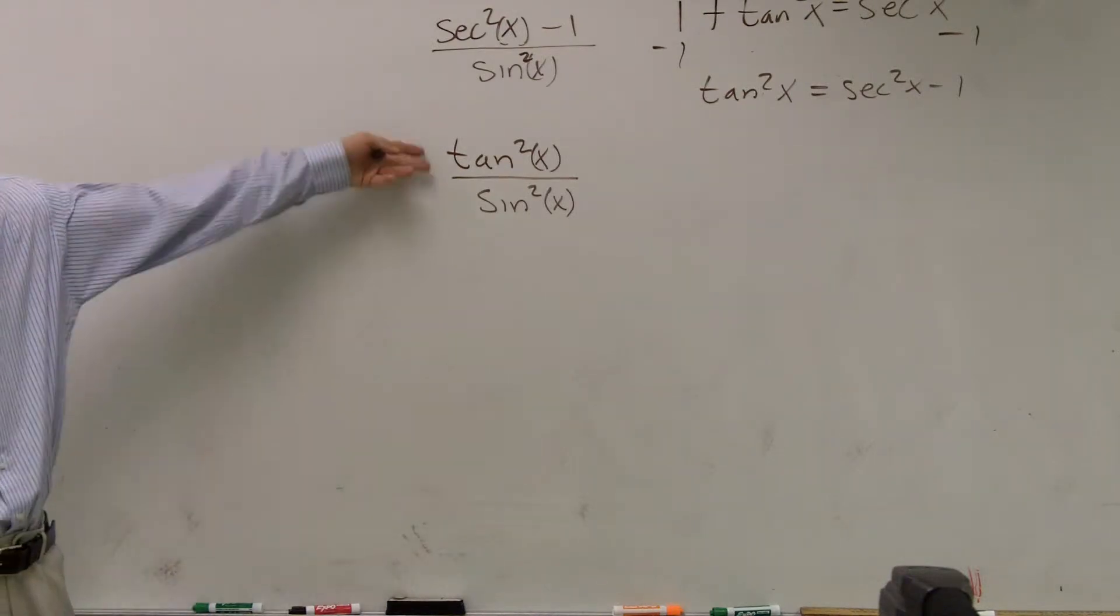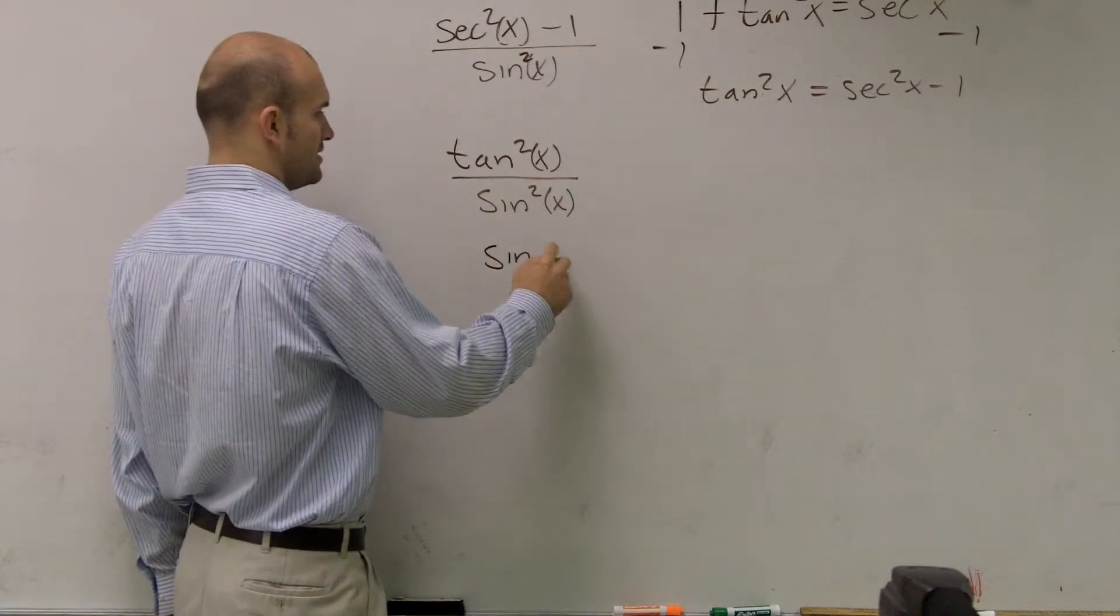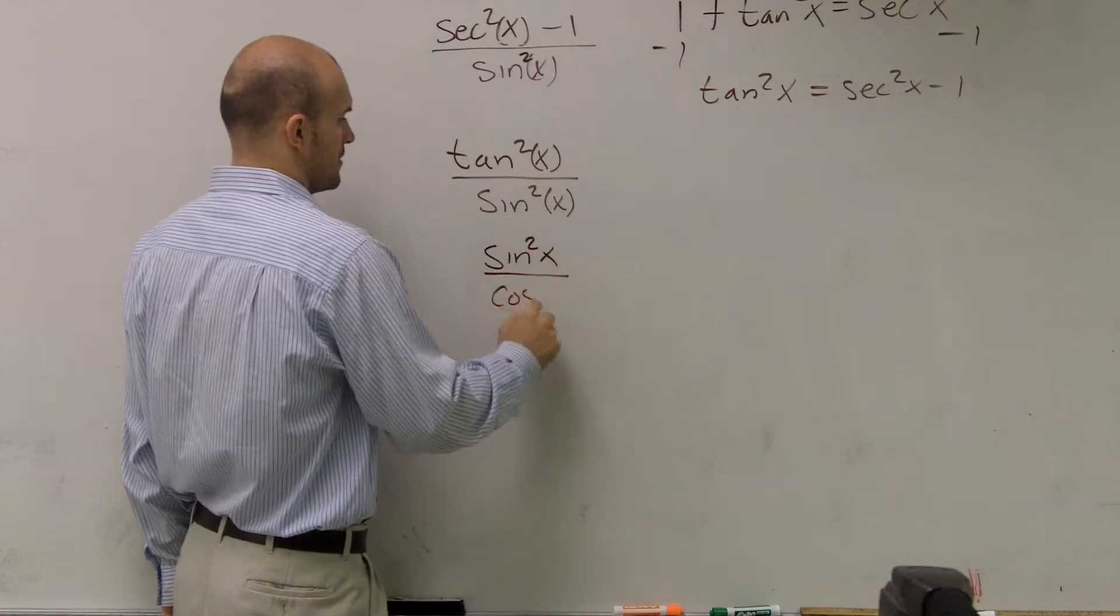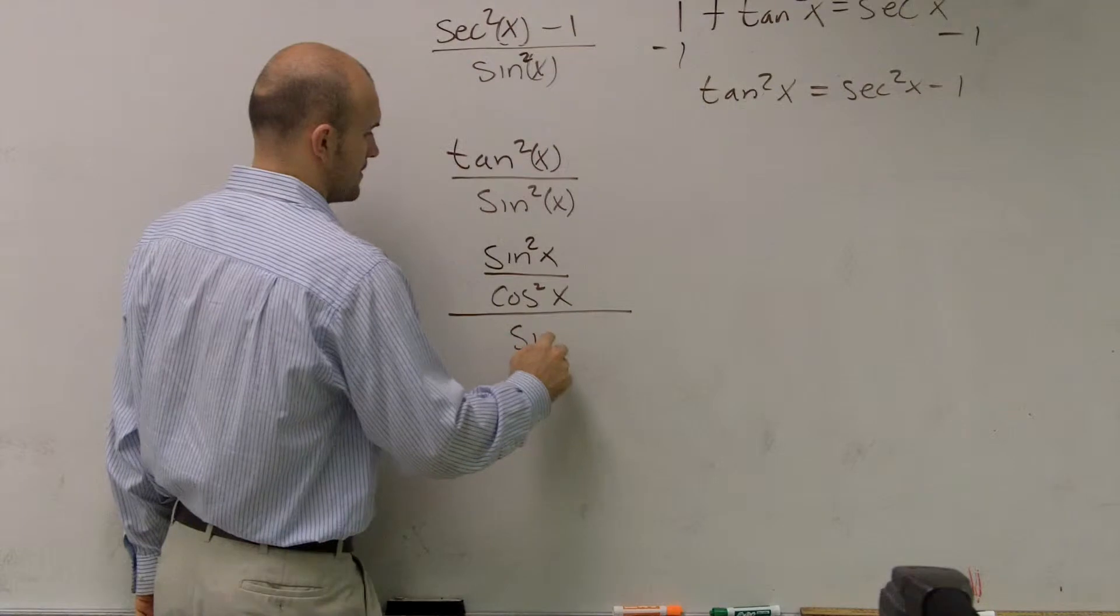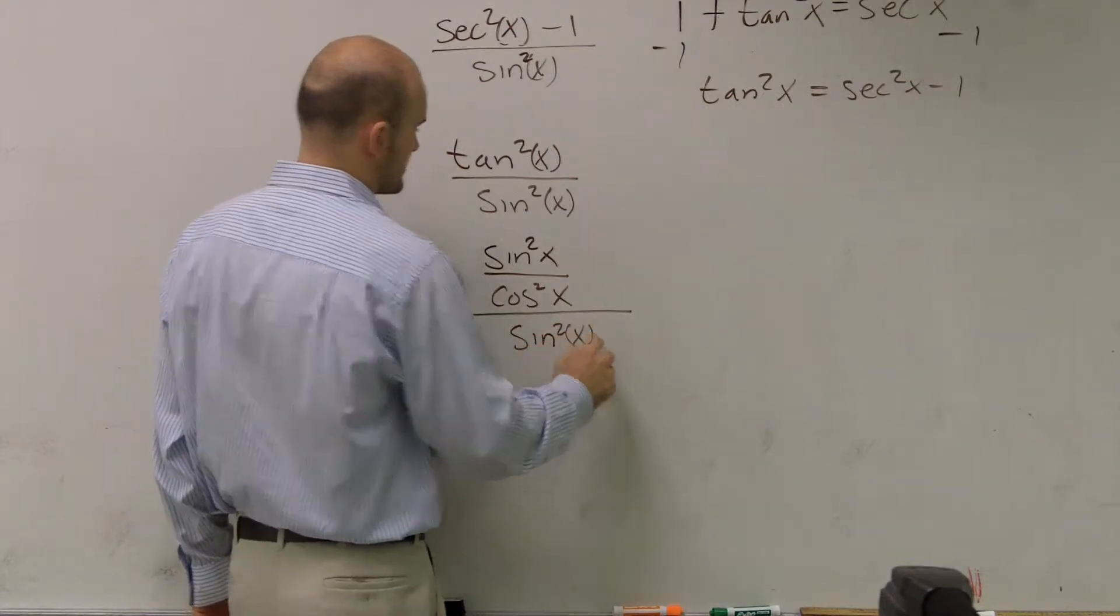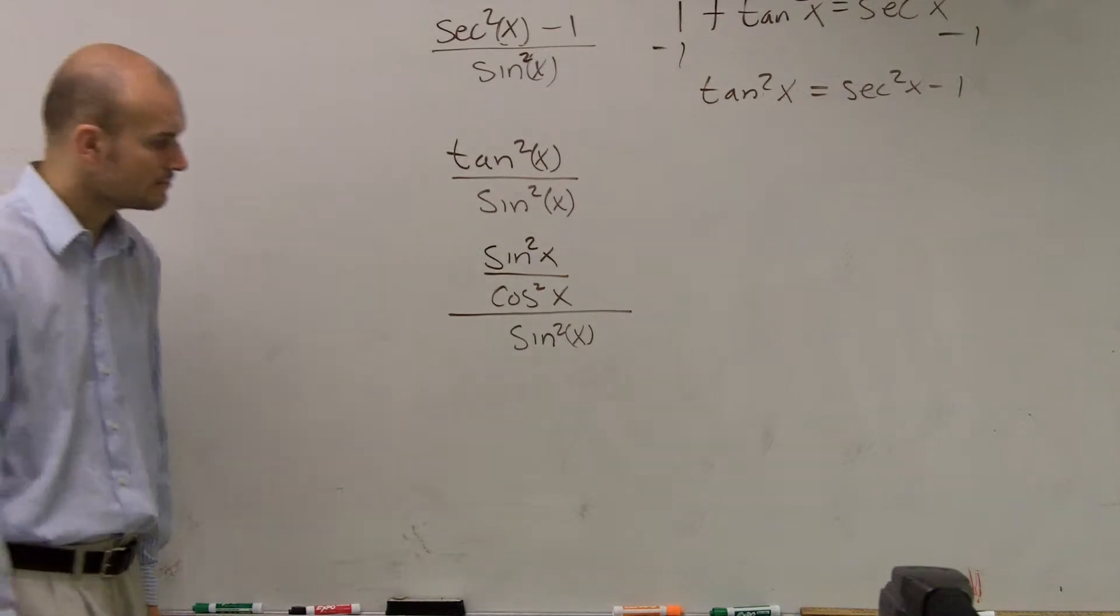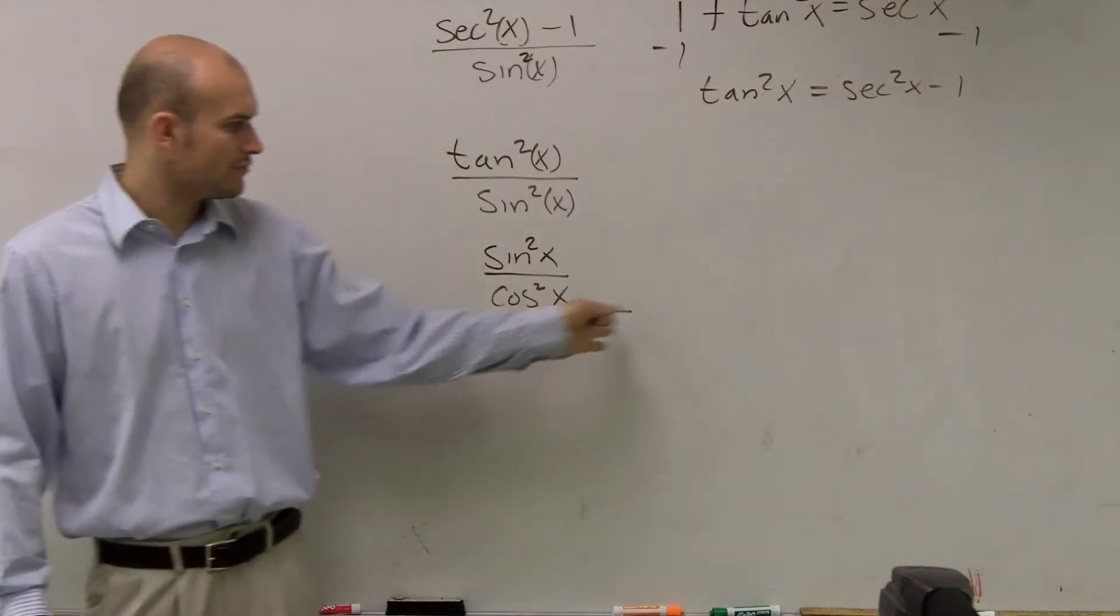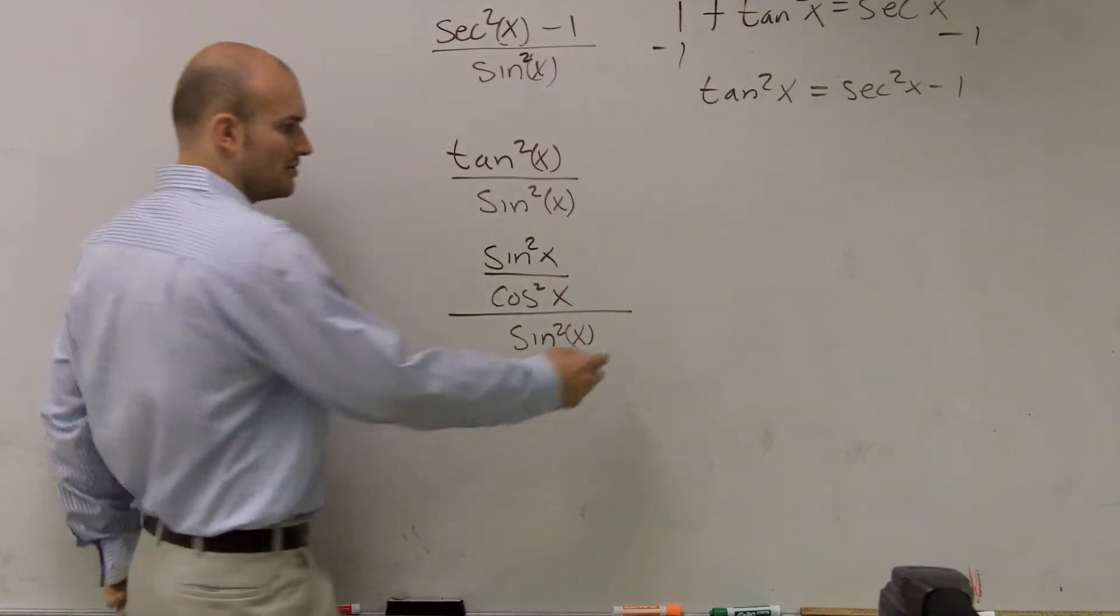Now what I could do is I can transfer this to sine over cosine. Sine of x, oh, square of x, over cosine squared of x, divided by sine squared of x. Now, the one thing that we've talked about is to get this off the bottom, we could rewrite this as multiply by our reciprocal, or we can just multiply by the reciprocal of both sides.